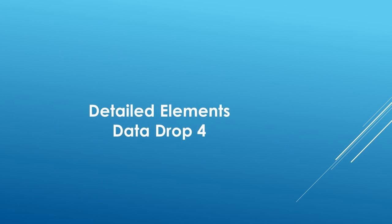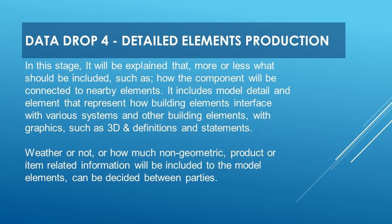Let's look at Data Drop 4 — the detailed elements production stage. In this stage, what should be included covers how the component will be connected to nearby elements. It includes model detail and elements that represent how building elements interface with various systems and other building elements, with graphics such as 3D and definitions and statements. Whether or how much non-geometric product or item related information will be included in the model elements can be decided between parties.